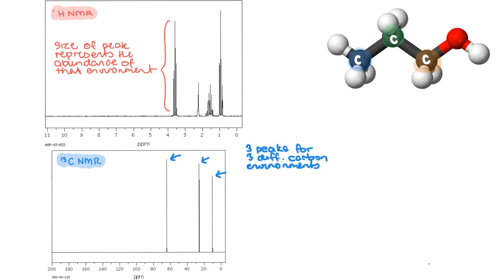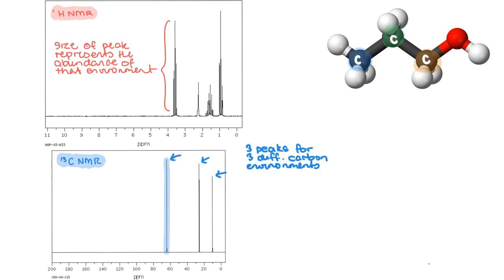In fact, the peak at about 64ppm corresponds to this value in your datasheet. So you know it represents the carbon next to the hydroxyl group. Simple.